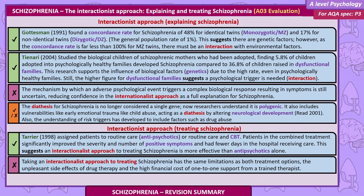Gottesman found a concordance rate for schizophrenia of 48% for identical twins (monozygotic MZ) and 17% for non-identical twins (dizygotic DZ), with a general population rate of 1%. This suggests genetic factors, but as the concordance rate is far less than 100% for MZ twins, there must be an interaction with environmental factors. Tienari studied biological children of schizophrenic mothers who had been adopted, finding 5.8% of children in psychologically healthy families developed schizophrenia compared to 36.8% in dysfunctional families, supporting both biological influence and the need for a psychological trigger.